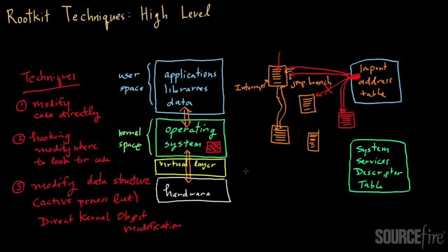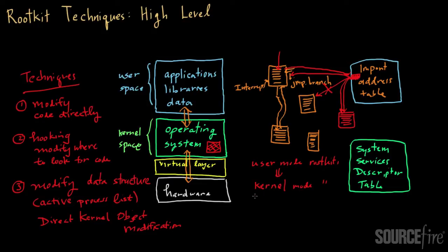Rootkits are classified based on the level at which they operate. Some rootkits primarily focus on modifying things at user space — for example, modifying the Import Address Table or user-land code. These are called user mode rootkits. One level down in complexity are kernel mode rootkits, which might modify the System Services Descriptor Table or actual kernel objects and data structures. Going one level deeper, there are virtual machine-based rootkits, though these have mostly been proof-of-concept with no real in-the-wild instances used in malware.